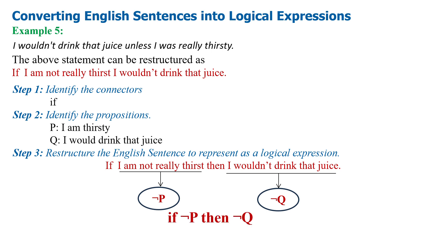These two propositional variables can be combined using the conditional logical operator: if negation P then negation Q, which can be represented as negation P implies negation Q. Here, implies represents the conditional logical operator.